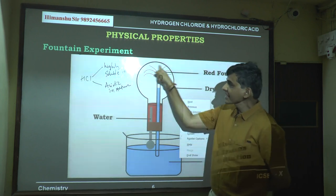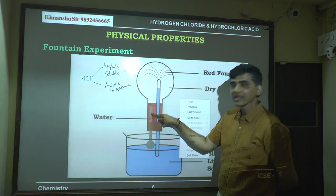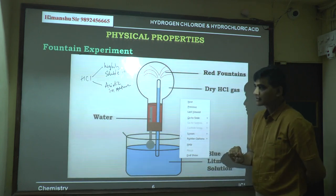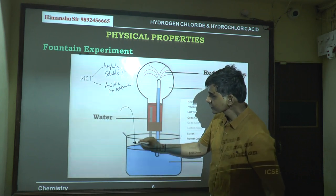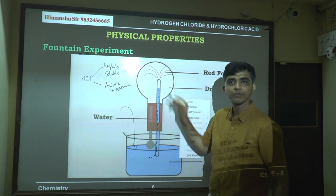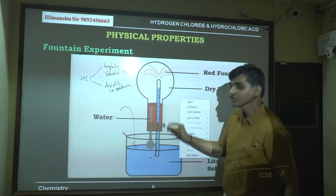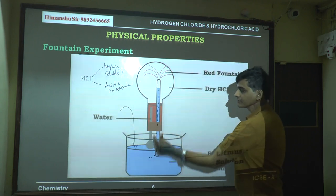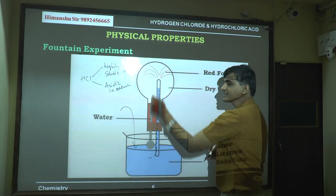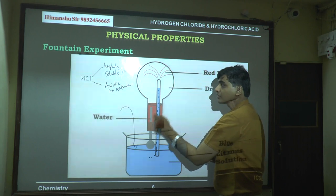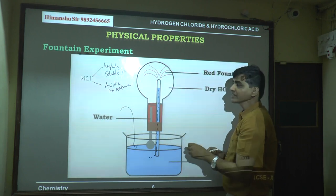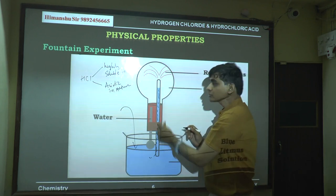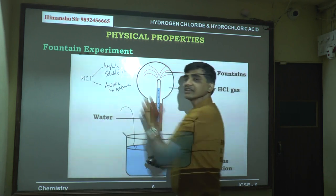When water enters from the dropper, the HCl gas inside the round-bottom flask dissolves in it. This creates a partial vacuum inside the flask, so the external pressure is higher and forces the blue litmus solution to enter through the jet tube. The entry of the blue litmus solution into the jet tube proves that HCl gas is highly soluble in water.